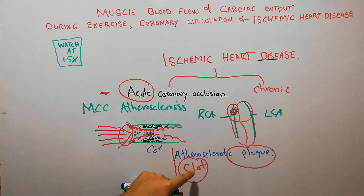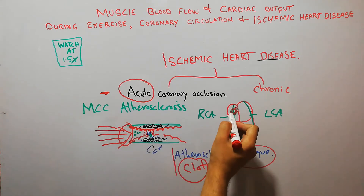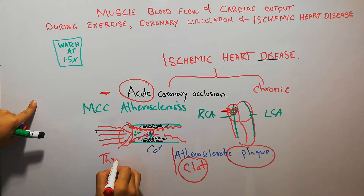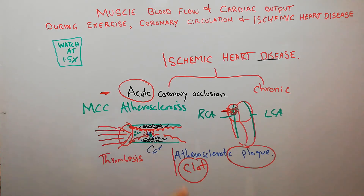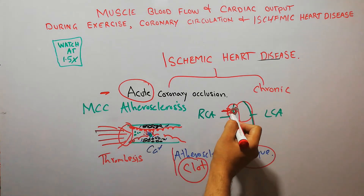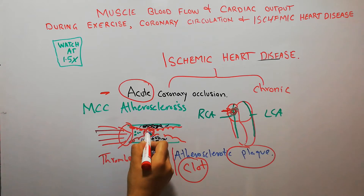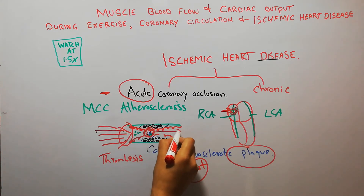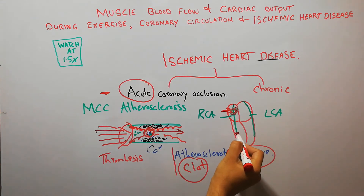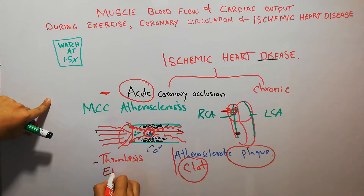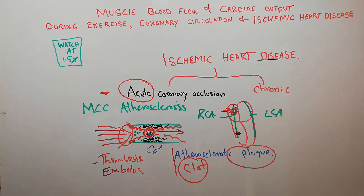If this blood clot remains at the point where it formed, it is labeled as thrombosis. If this clot gets dislodged from that place and travels forward, blocking a vessel at a different point, it is labeled as an embolus, and the process is known as embolism. So acute coronary occlusion can be due to the formation of a thrombus in the blood vessel.